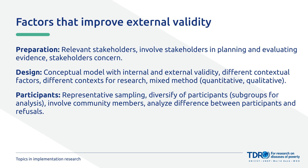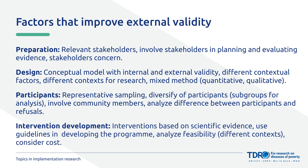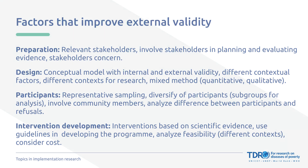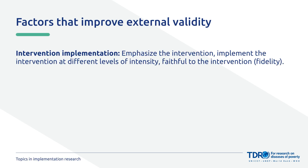Involve as many community members as possible. When selecting participants, first identify and describe the characteristics of the target population, compare the participating population to the target population, and analyze the difference between participants and possible refusals. When developing the intervention, use interventions based on scientific evidence, leaning on existing guidelines and analyzing feasibility in different contexts, and be sure to consider the cost. During implementation, emphasize the intervention itself rather than associated factors like training and supervision. Implement at different levels of intensity, and be as faithful as possible to the intervention, noting any changes observed during implementation.